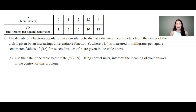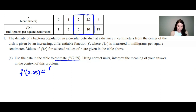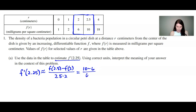Since we have a table, we're unable to find the derivative just by looking at it, so we're going to estimate the derivative using two points from the table. 2.25 is right in between our values of 2 and 2.5, so we're going to use both of these points. To estimate f'(2.25), that's going to be approximately equal to the slope between the two points: f(2.5) minus f(2) all divided by 2.5 minus 2. Plugging in those values gives us 10 minus 6 divided by 0.5, or 4 divided by 0.5, which is 8.